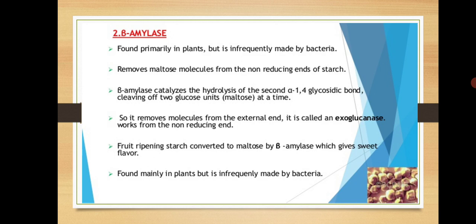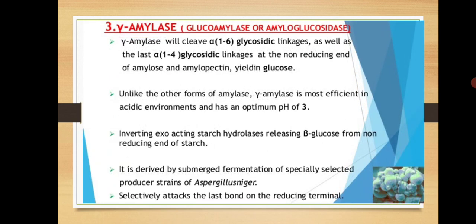Beta amylase cleaves at the corner — the non-reducing end — releasing maltose after cutting two sugar units. This enzyme carries out hydrolysis of the alpha-1,4 glycosidic bond, involving water molecules. Unlike alpha amylase which randomly breaks alpha-1,4 linkages in the interior, beta amylase clips at the end and releases maltose. It removes the molecule from the external end, hence it is called exoglucanase.